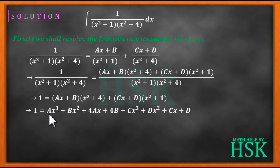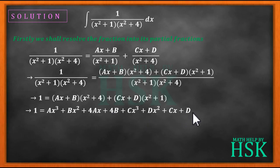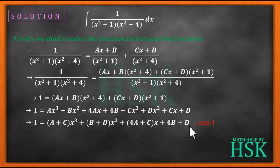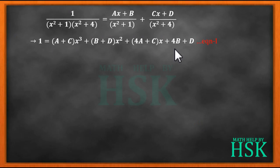We can now separate terms with similar powers: ax³ + cx³, bx² + dx², 4ax + cx, and 4b + d. On simplification, we get 1 = (a + c)x³ + (b + d)x² + (4a + c)x + (4b + d). This is equation number one.